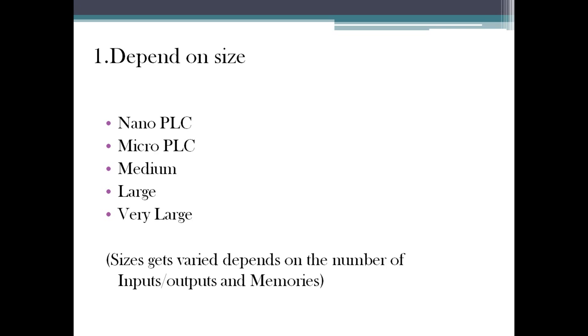If you take a nano PLC, it will have very few number of IOs. Micro will be more than nano but comparing to medium scale it will be very less. Very large scale PLC will have more than 10,000 or 20,000 IOs.